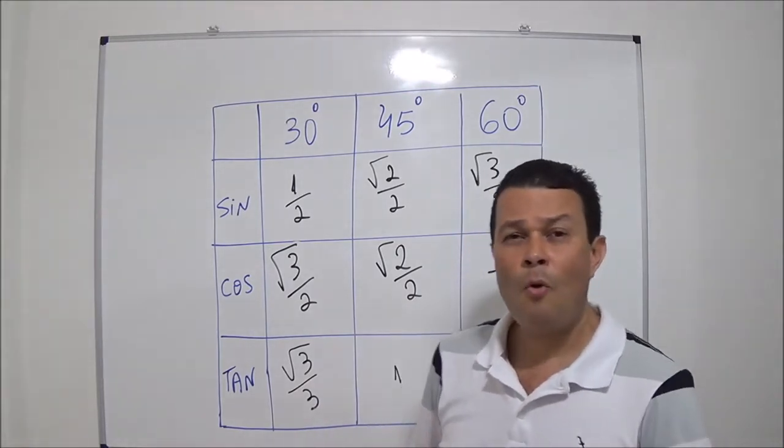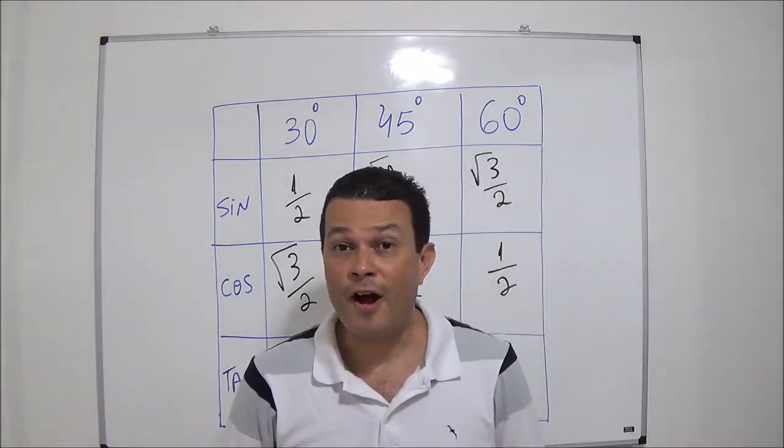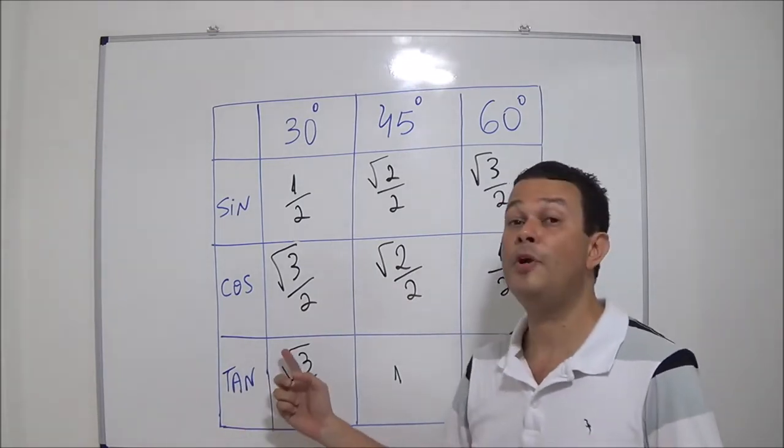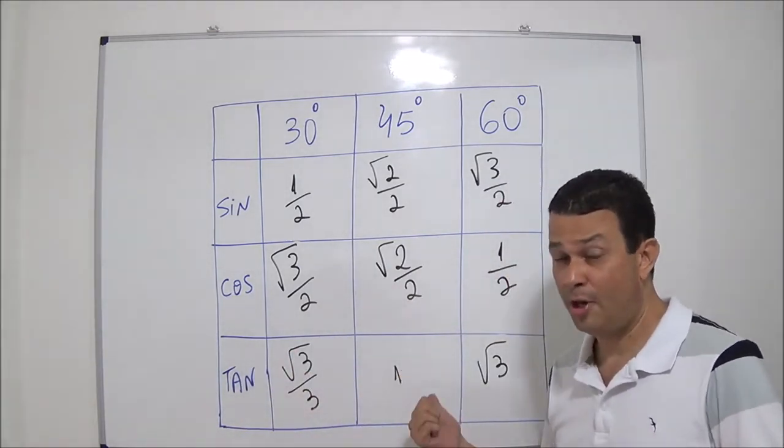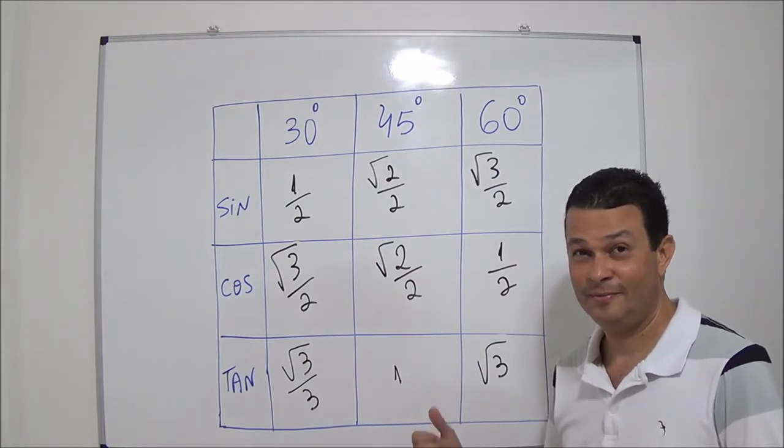And if I ask you, what's tangent of 45? Square root of three over three. One. Stop here. This is the answer. Alright,